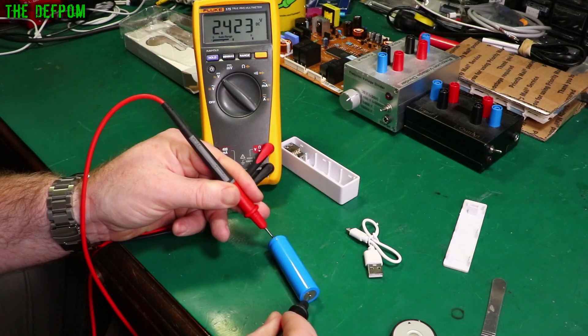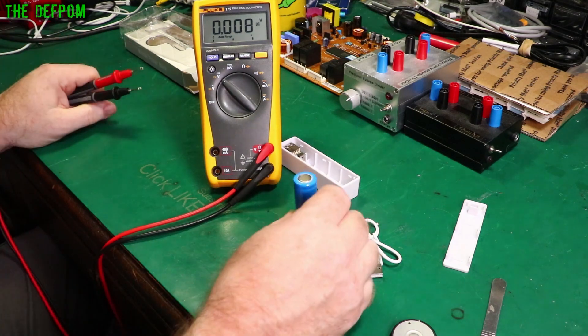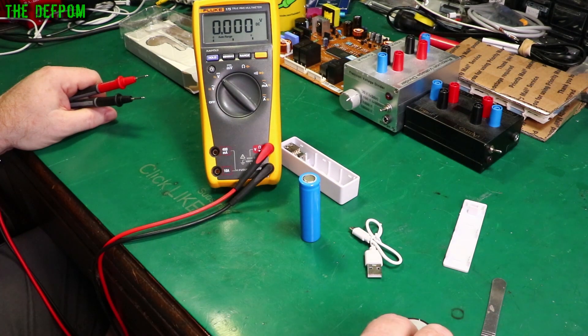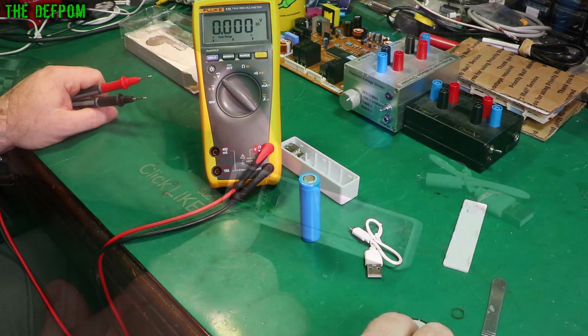2.4 volts, yep that's fully discharged. So we can fully charge this and see what goes into it and tell you exactly what its actual capacity is. I reckon it's going to be about a quarter of what it says it is.